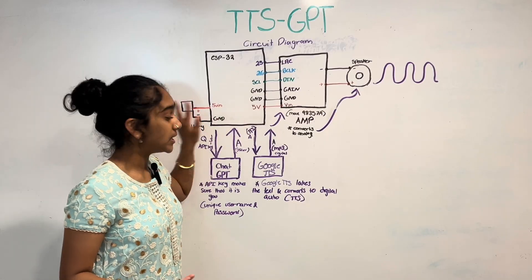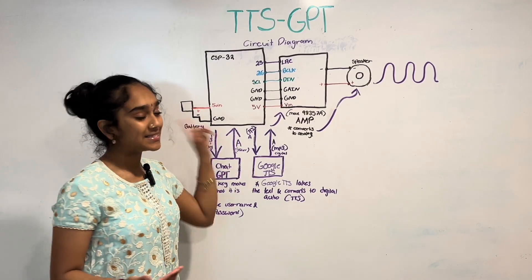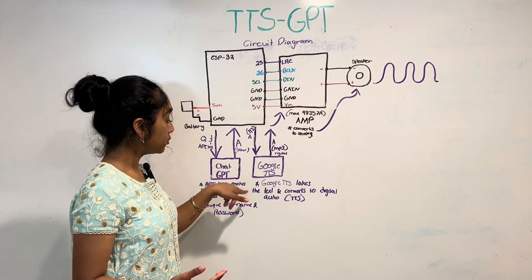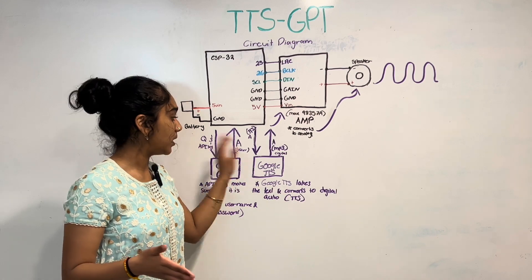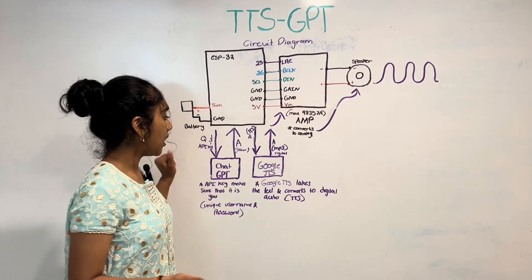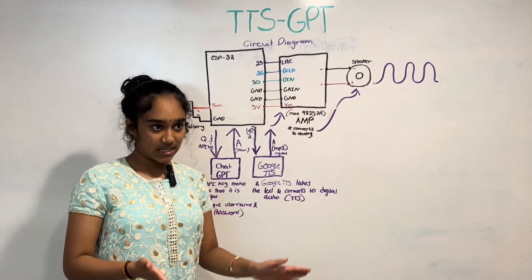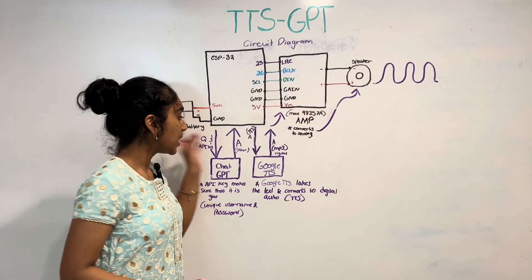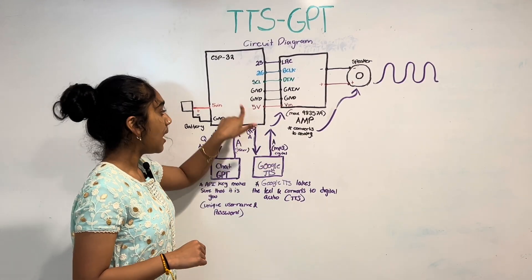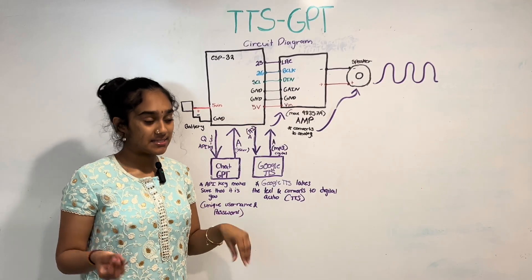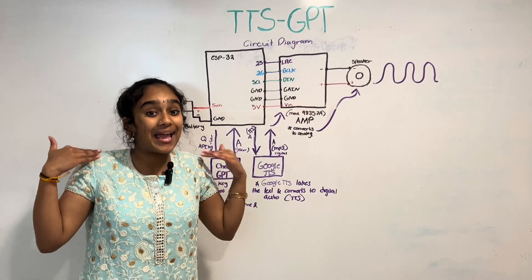The ESP32 sends that answer in text to Google TTS — Google Text-to-Speech. Google TTS takes the text and converts it into digital audio, specifically an MP3 file in digital signals. So the text answer gets turned into an actual audio MP3, and then Google TTS sends that answer as an MP3 in digital signals back to the ESP32. But we don't want it in digital signals — we want analog so we can hear it through the speaker.